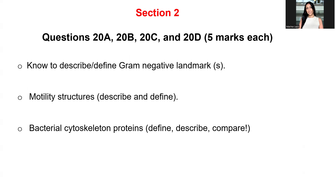Section two is question 20 with parts A, B, C, and D. You have to describe them in one to two sentences — it's five marks each, so it's not highly detailed; you write in the space provided. Some hints: know how to describe gram-negative cell wall landmarks — we talked about structural landmarks — and motility structures including gram-negative cell wall type 4, so know how to describe and define each of them.